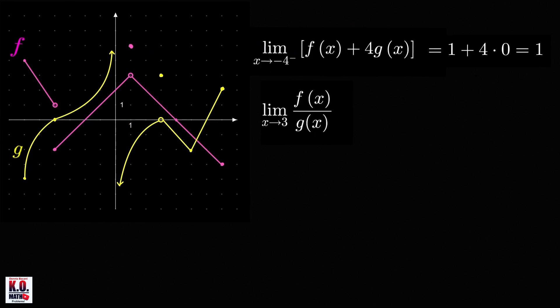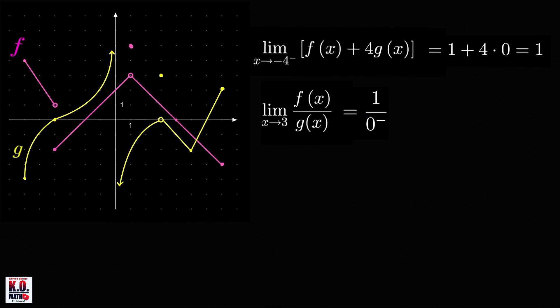Now, if we look at the graph of g, the function values are actually approaching 0 from the left of 0 because the points are below the x-axis. Therefore, the limit of this quotient is equal to 1 over 0 from the left. And if we're going to divide 1 by a super small negative number, then we're going to get a super large negative number. Therefore, the limit of this one is equal to negative infinity.